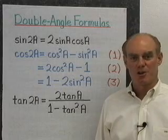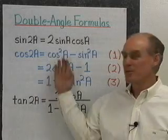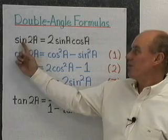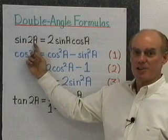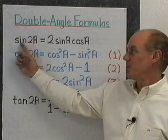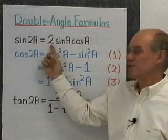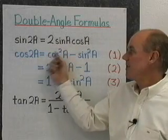In this section, we want to look at what are called double-angle formulas, and I've written them over here on the board. First of all, the sine of 2a — that's why it's called a double-angle formula — the sine of 2a is always written 2 sin a cos a.